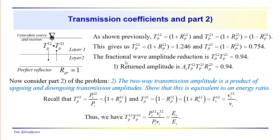The amplitude that comes back up from this perfect reflector is the source amplitude — which we let equal one — multiplied by T sub P12 times T sub P21. With the perfect reflector contributing a factor of one, this entire sequence of factors equals 0.94.